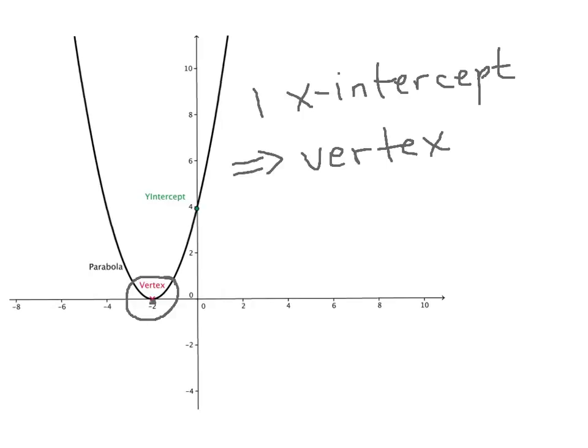But notice that so far we've seen a parabola has two x-intercepts, no x-intercepts, and in this particular case, we have one x-intercept. And we're going to tie this back in.